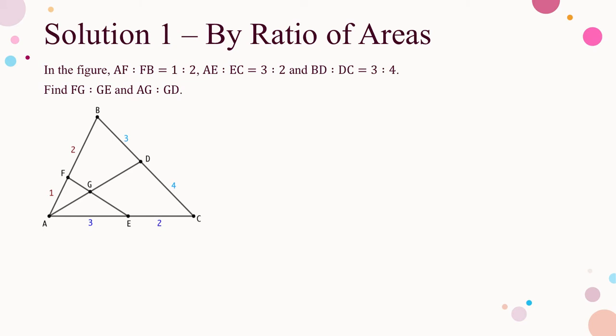Let me demonstrate the solution by ratio of areas first. In order to make use of the given ratios, join GB and GC. Let the area of triangle AGF be A. By the given ratio 1 to 2, the area of BGF is 2A. Similarly, let the area of BGD be 3B, then the area of CGD is 4B. Let the area of AGE be 3C, then the area of CGE is 2C.